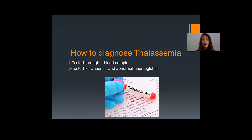Let's see how thalassemia is diagnosed. It is diagnosed by blood sample testing, which tests for the presence of abnormal hemoglobin, the presence of abnormal red blood cells, or tests for anemia.